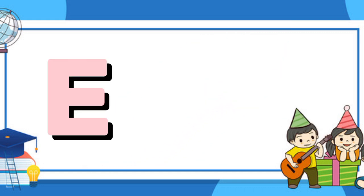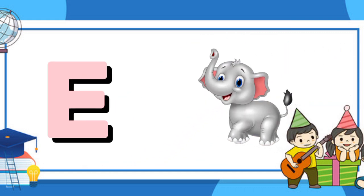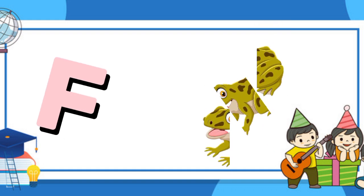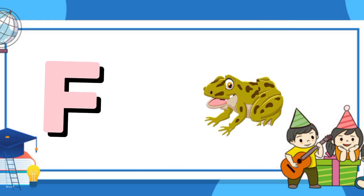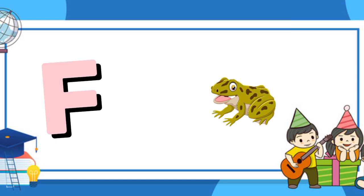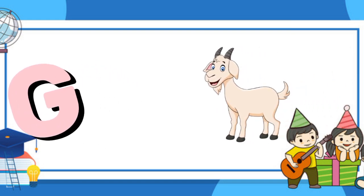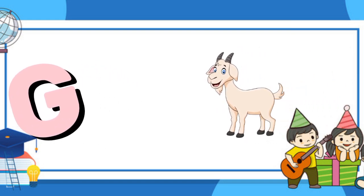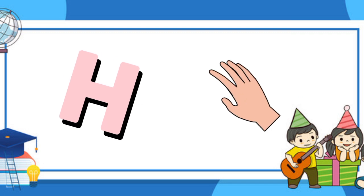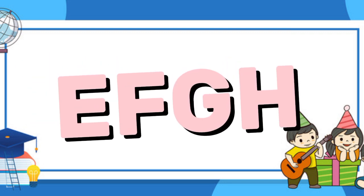E is for elephant, e-e-elephant. F is for frog, f-f-frog. G is for goat, g-g-goat. H is for hand, h-h-hand.